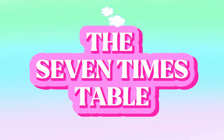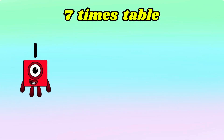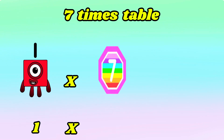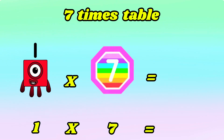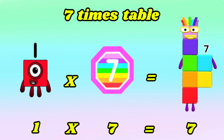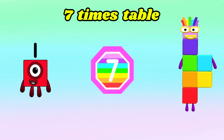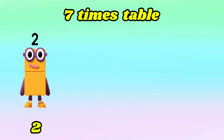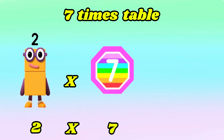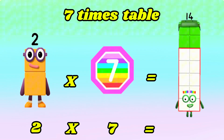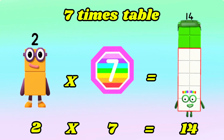Let's learn the 7 times table. 1 times 7 is equals to 7. 2 times 7 is equals to 14.